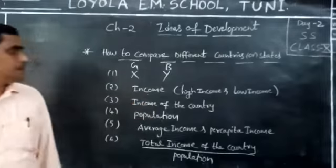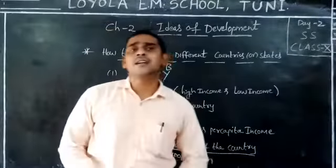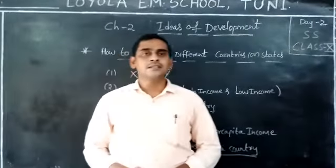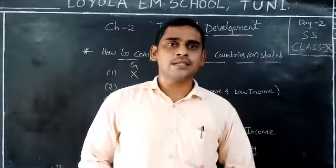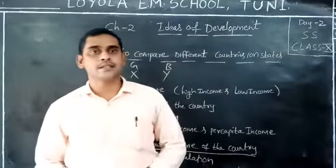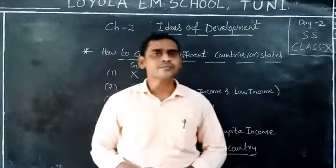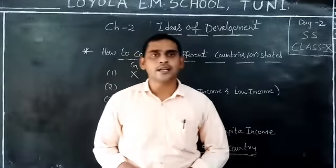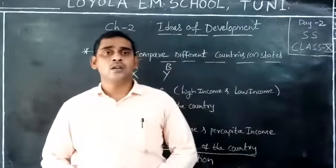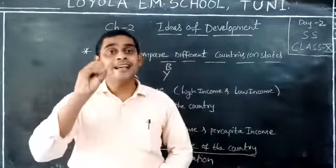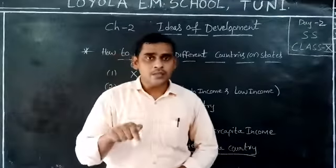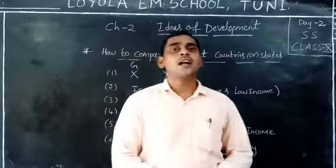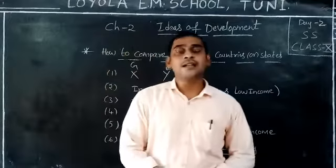When we take income as an indicator, some countries are higher income countries and some are lower income countries. People living in higher income countries already have income and money. With that, they can buy what they need. People living in those areas have the goal of earning more income compared with less income countries.